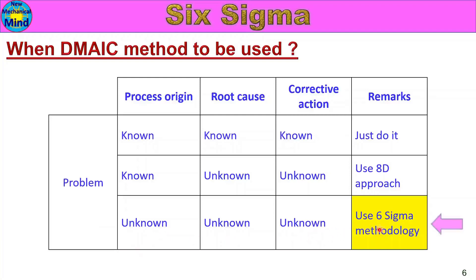In the third case, use Six Sigma methodology. Six Sigma methodology is used for complicated and critical problems in the process. That's how it is effective.